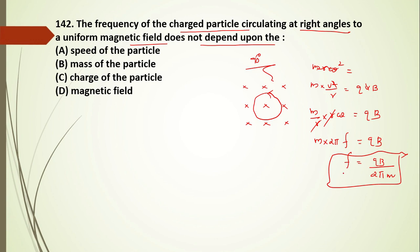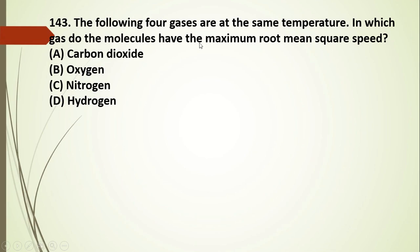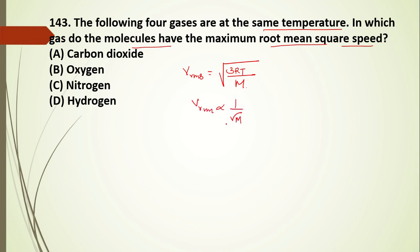Question 143: four gases at the same temperature — which has molecules with maximum root mean square speed? The rms speed equals the square root of 3RT/M. This means vrms is inversely proportional to the square root of molecular mass. The gas with the smallest molecular mass will have the highest rms speed. The answer is D.